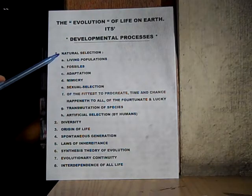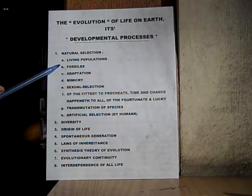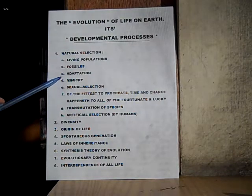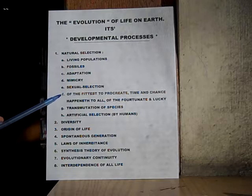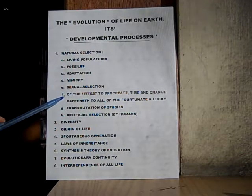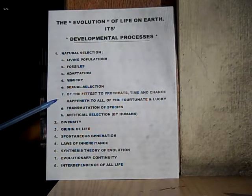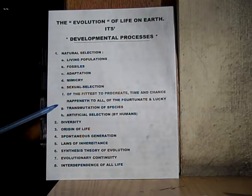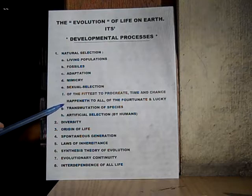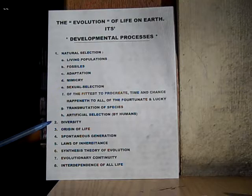Number one: natural selection. A. Living populations. B. Fossils. C. Adaptation. D. Mimicry. E. Sexual selection. F. Of the fittest to procreate — time and chance happeneth to all, of the fortunate and lucky. That's what's meant by fittest. G. Transmutation of species. H. Artificial selection — this is mainly by humans.